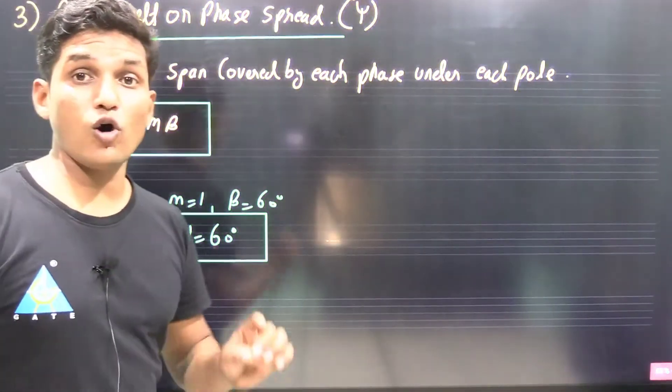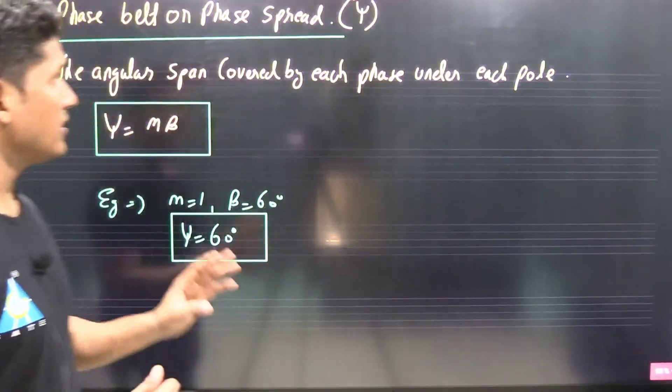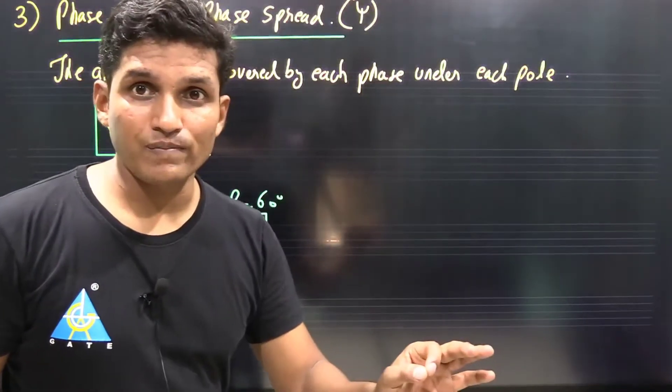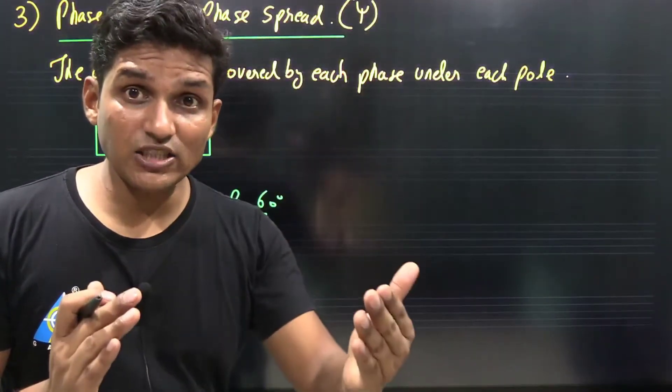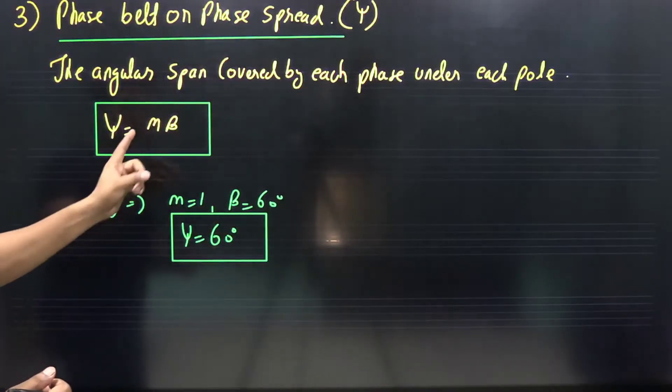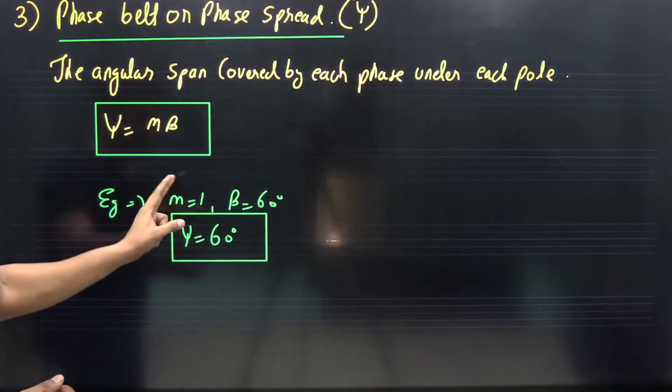Phase belt or phase spread: the angular span covered by each phase under each pole. That means under each pole, how much angular span is covered by each phase? That is m into beta. In this particular example, m is 1, beta is equal to 60 degrees, so xi is 60 degrees.